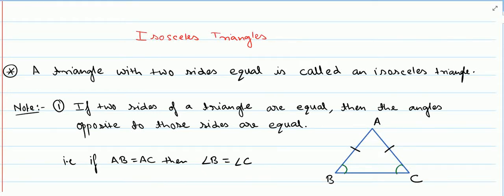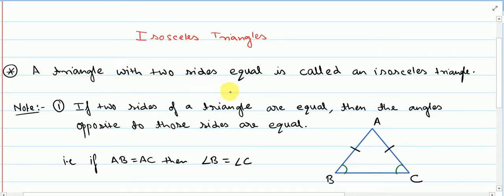Good morning children. Today we are going to start a new topic: isosceles triangles. A triangle with two sides equal is called an isosceles triangle. You can also say that if in a triangle two angles are equal, then the triangle is said to be an isosceles triangle.